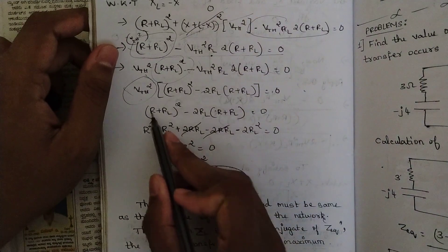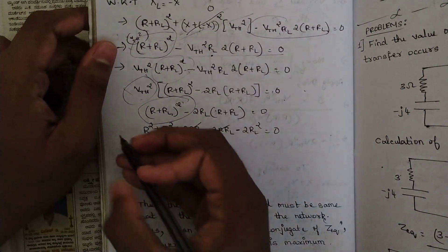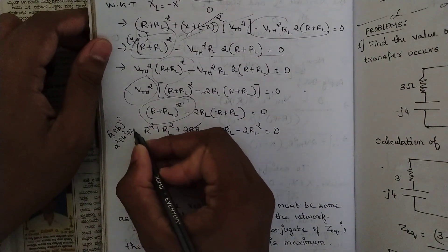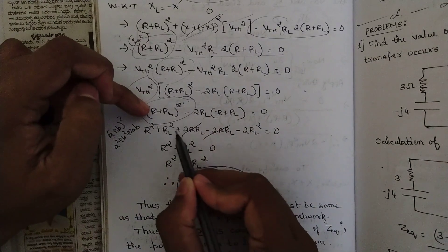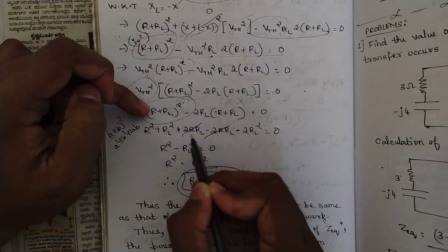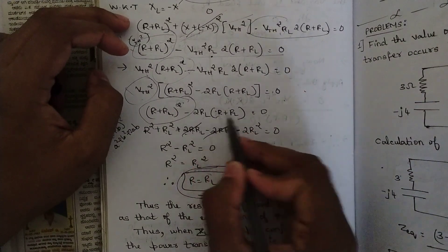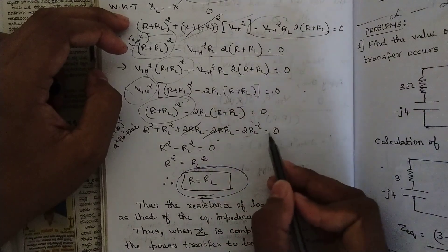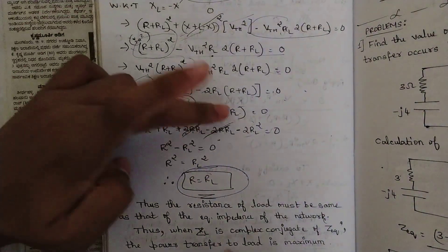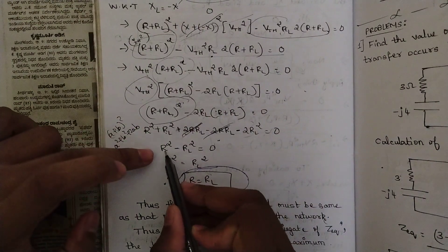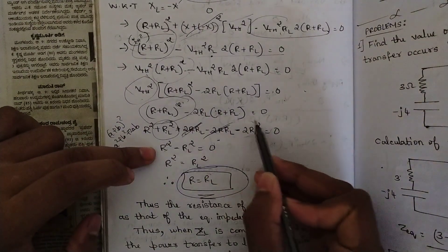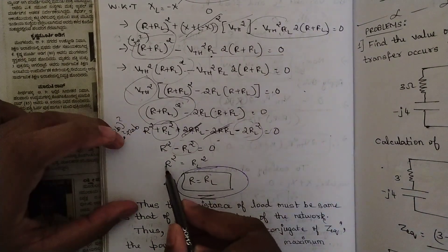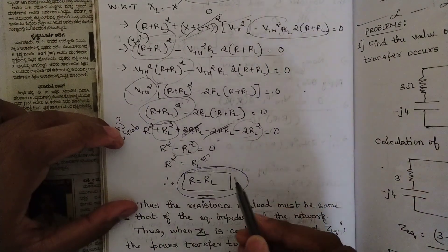Taking V_th squared as common and cancelling it, we expand (R plus R_L) squared as R squared plus R_L squared plus 2R·R_L, then subtract 2R_L(R plus R_L), which gives minus 2R·R_L minus 2R_L squared. The plus 2R·R_L and minus 2R·R_L cancel, leaving R squared minus R_L squared equals zero, therefore R squared equals R_L squared. Cancelling the squares, R equals R_L.